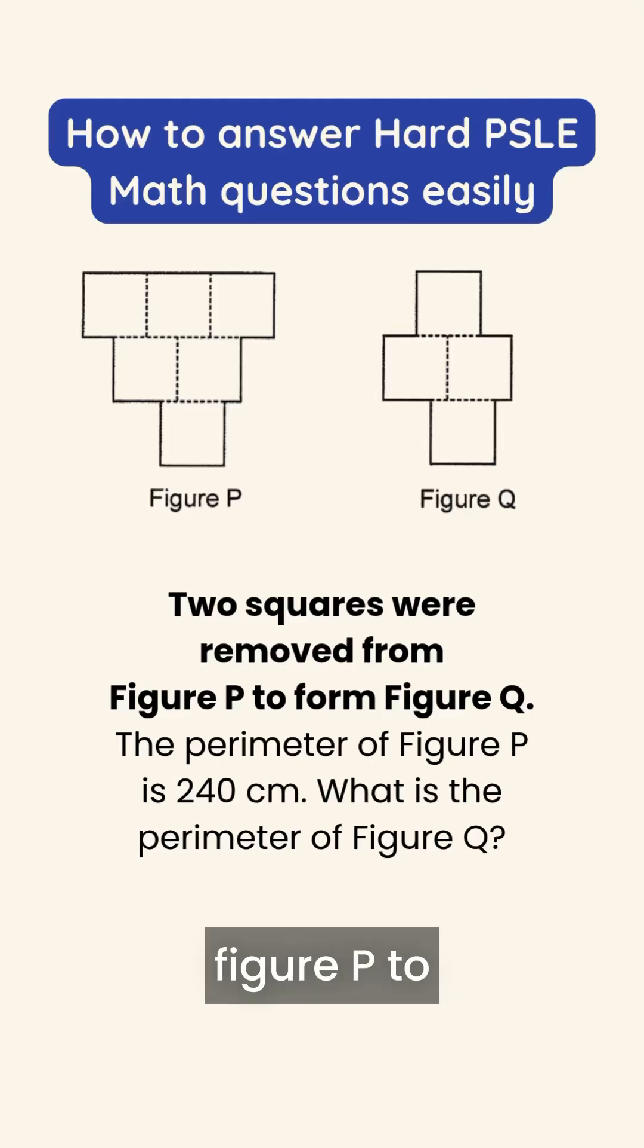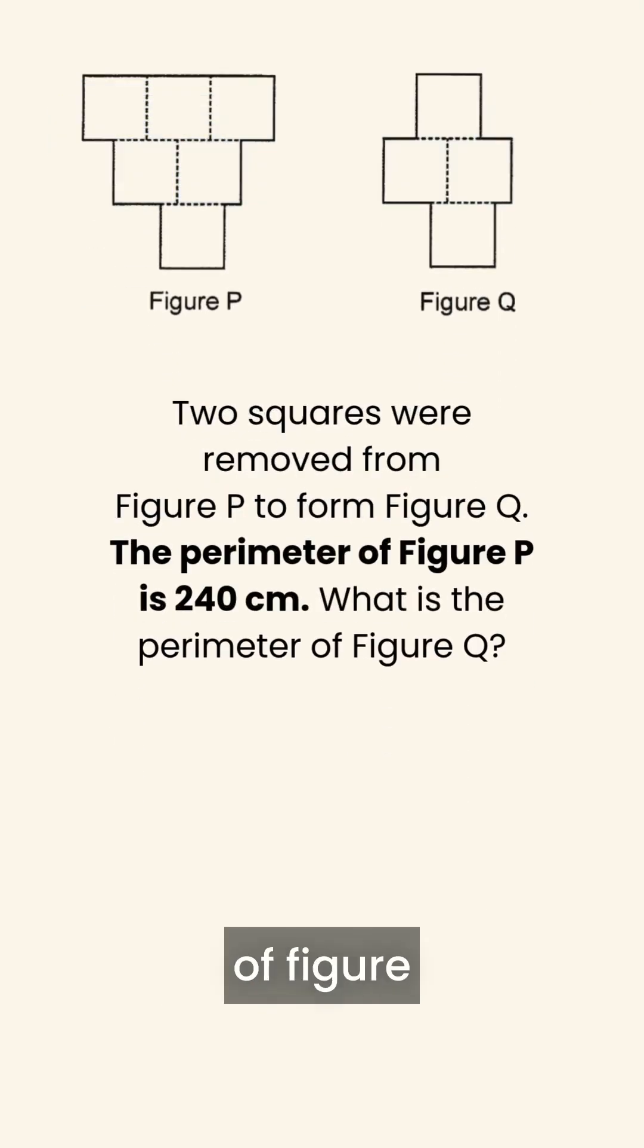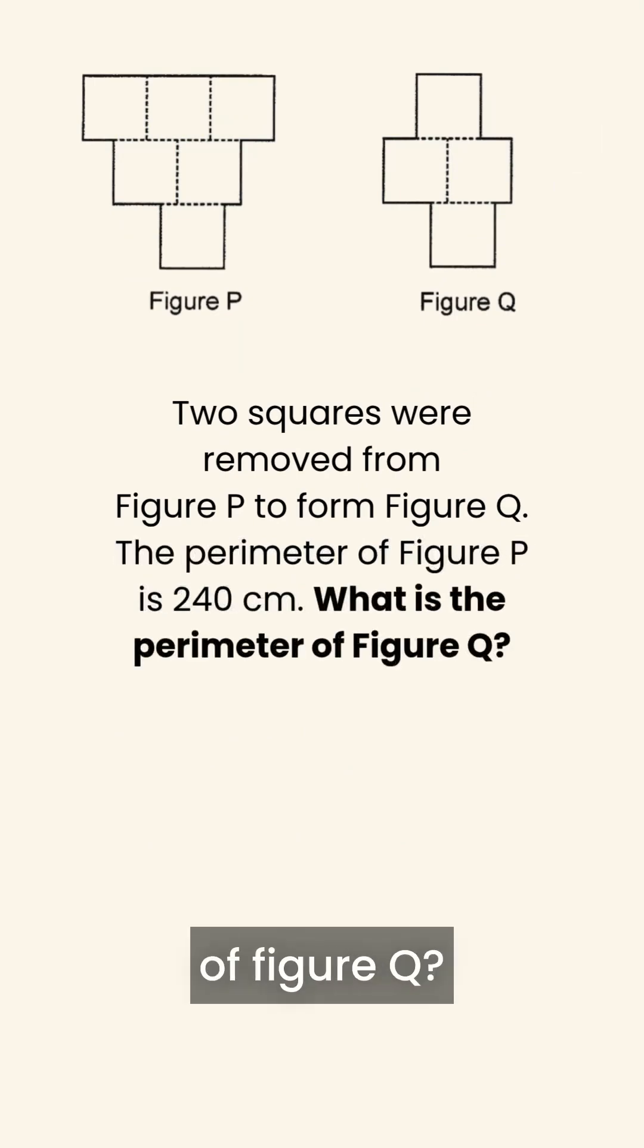Two squares were removed from figure P to form figure Q. The perimeter of figure P is 240 centimeters. What is the perimeter of figure Q?